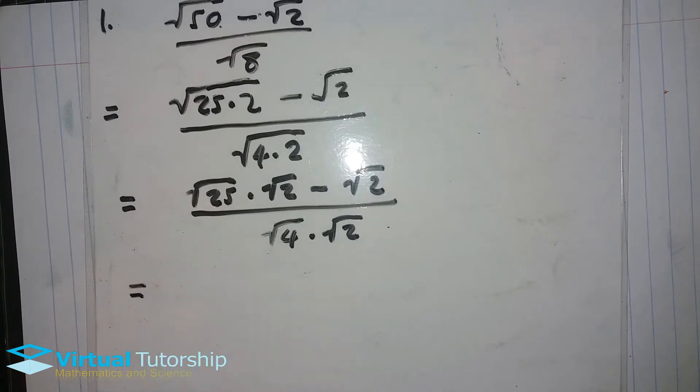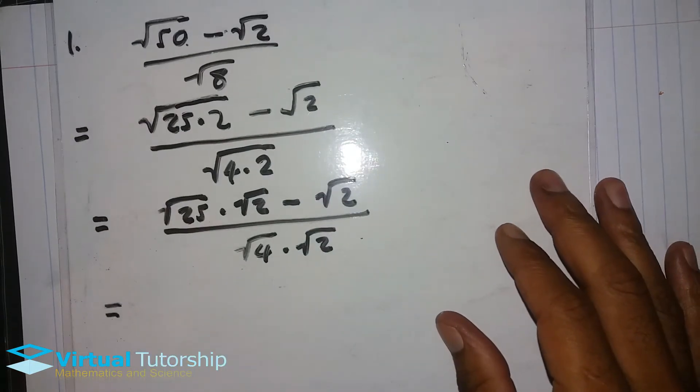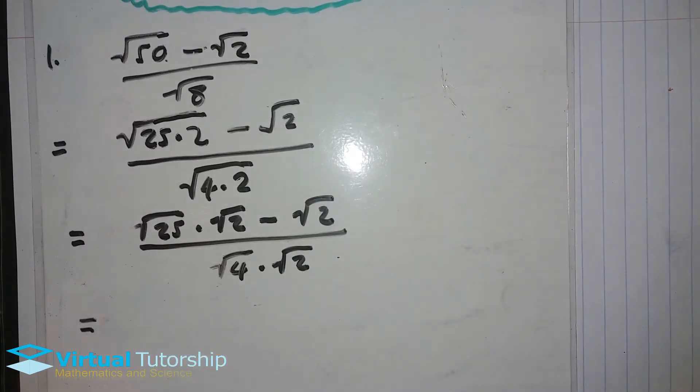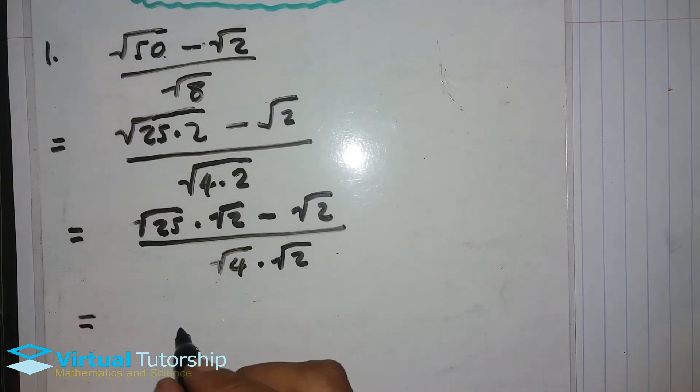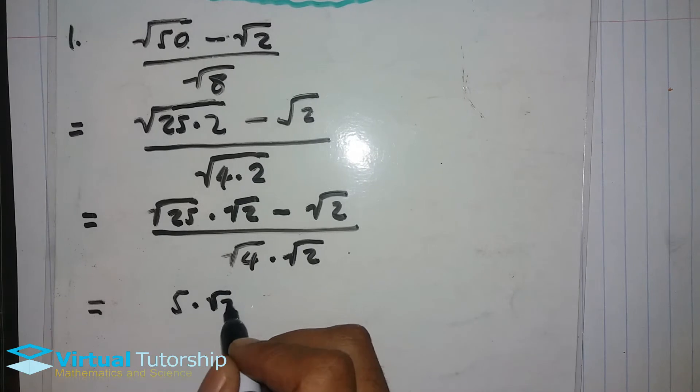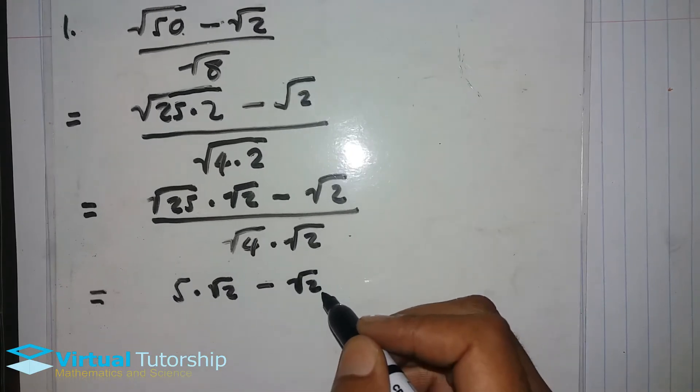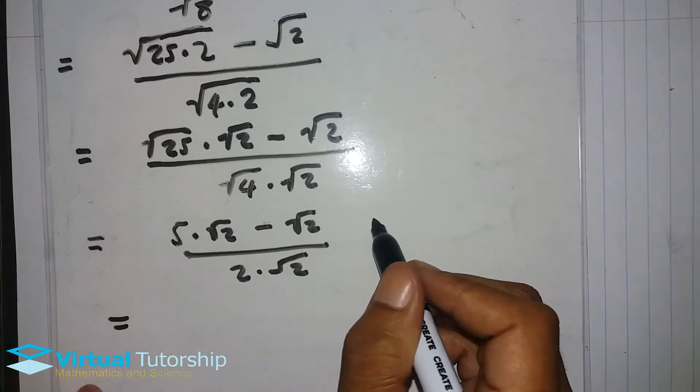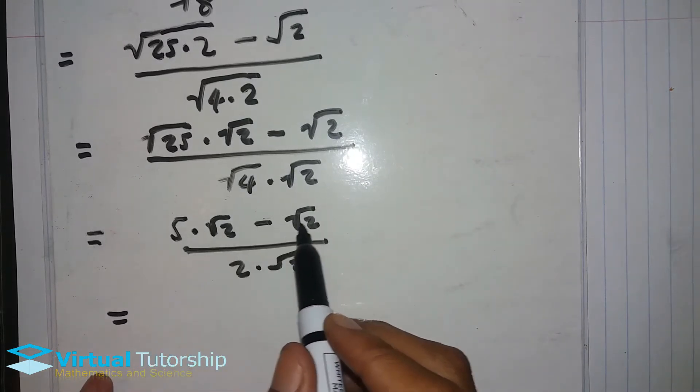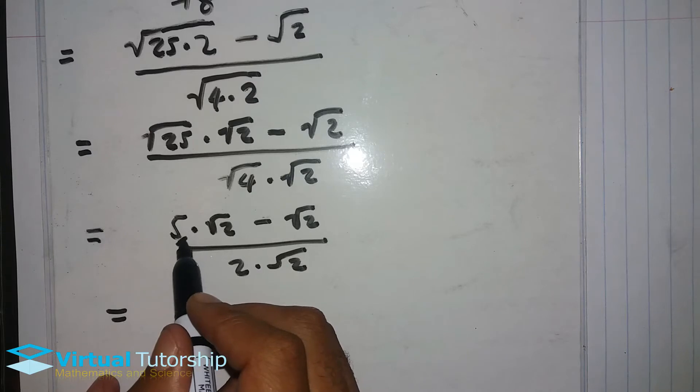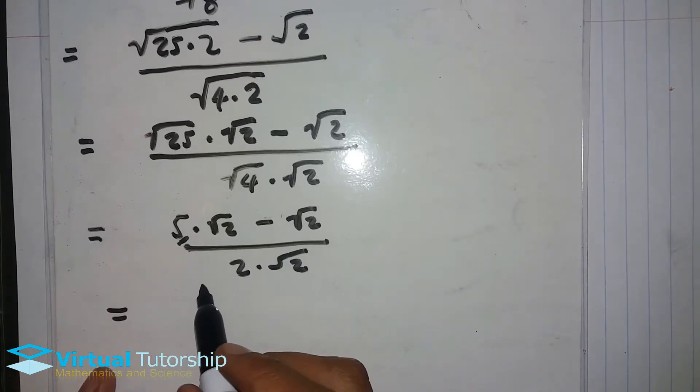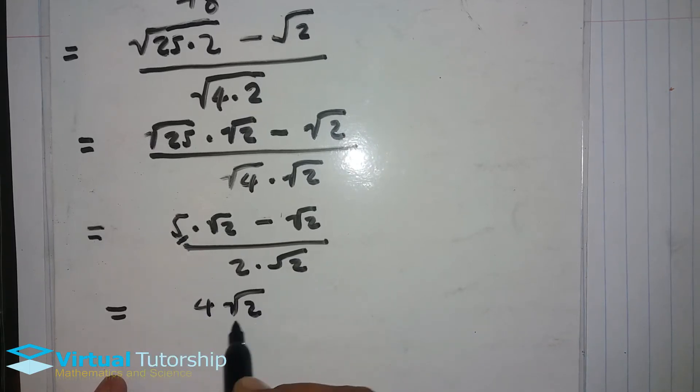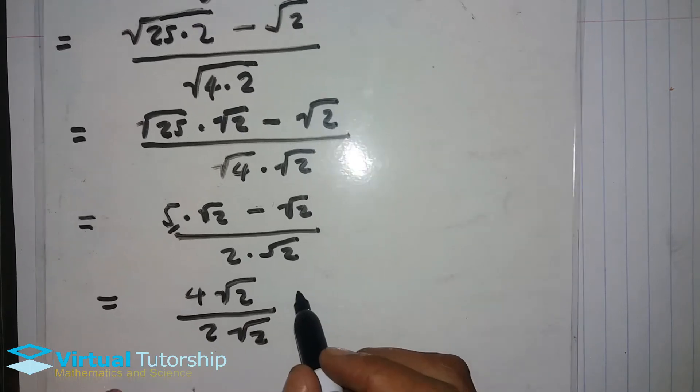It is equal to, applying the first principle of radicals, the square root of 25 is 5 times square root of 2 minus square root of 2 over the square root of 4, which is 2, times square root of 2.